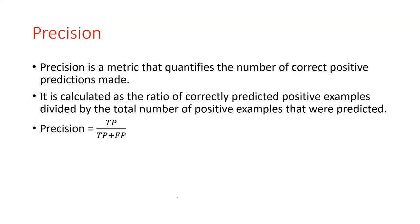The second evaluation metric is precision. Precision measures the correct positive predictions made by your model. It is calculated as the ratio of correctly predicted positive examples — true positives — divided by the total number of positive examples predicted, that is true positives plus false positives.